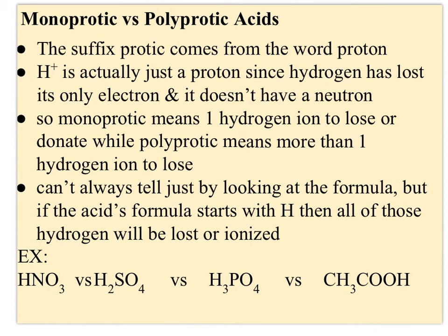The last concepts are monoprotic versus polyprotic acids and the Lewis acid-base model. The term 'protic' comes from proton — H+ is really just one proton since hydrogen has no neutrons and loses its only electron to become H+. Monoprotic means one hydrogen ion can be lost by that substance, and polyprotic means more than one. You also see diprotic (two hydrogens given up) or triprotic (three).